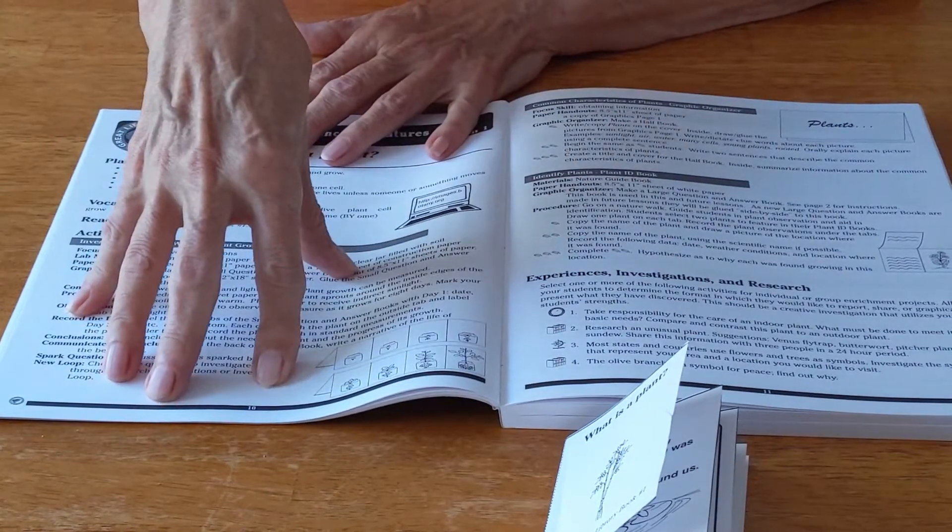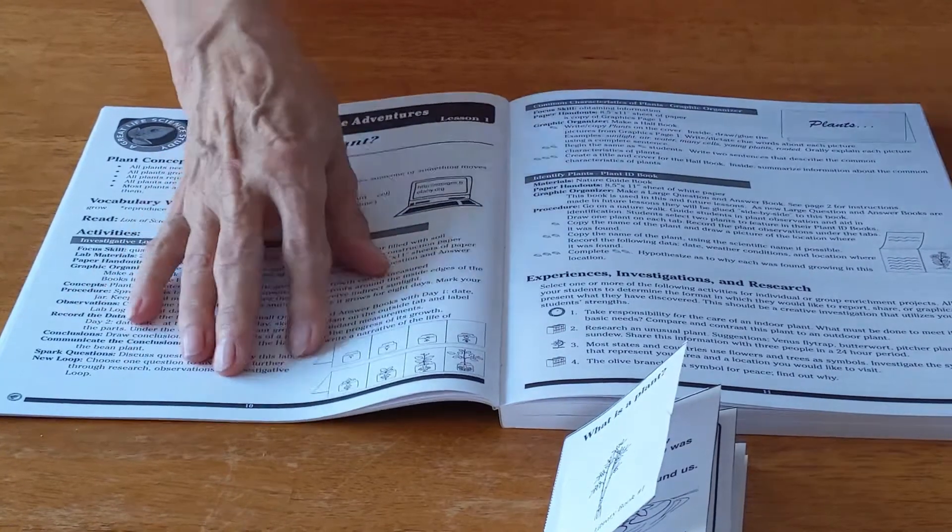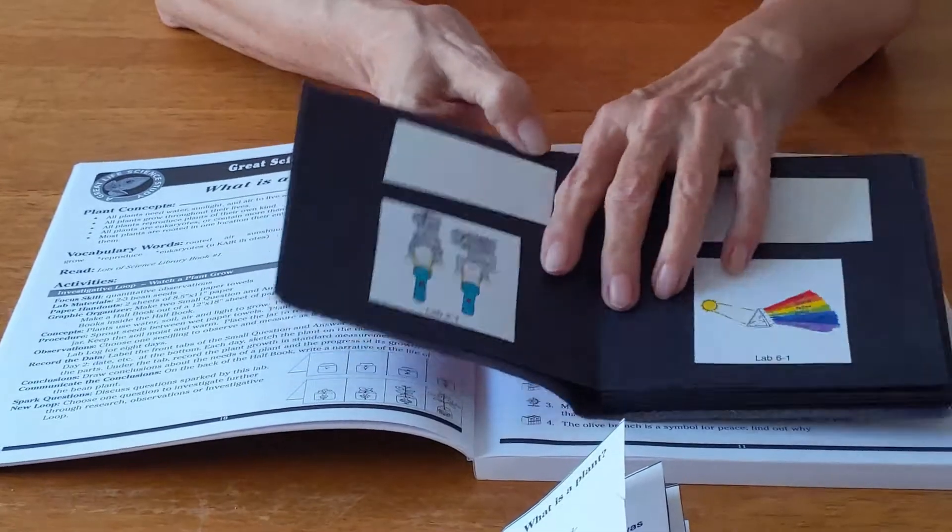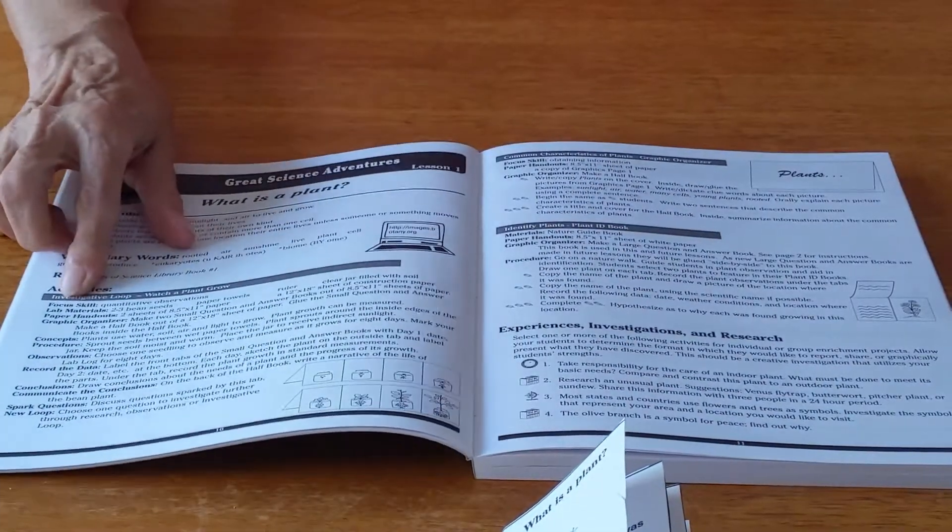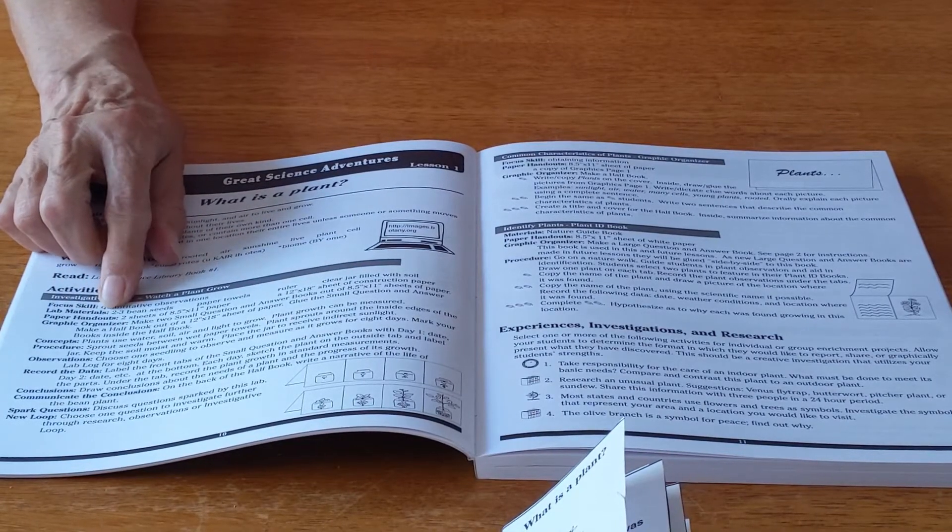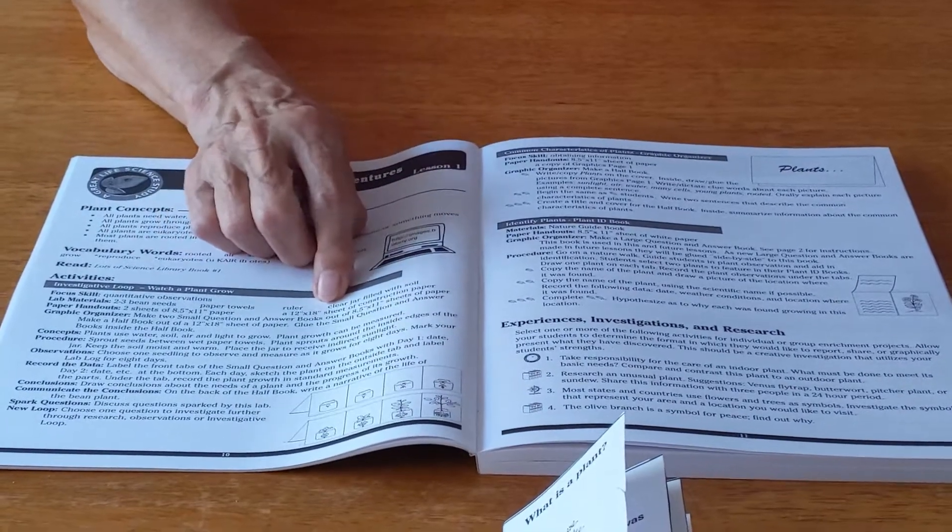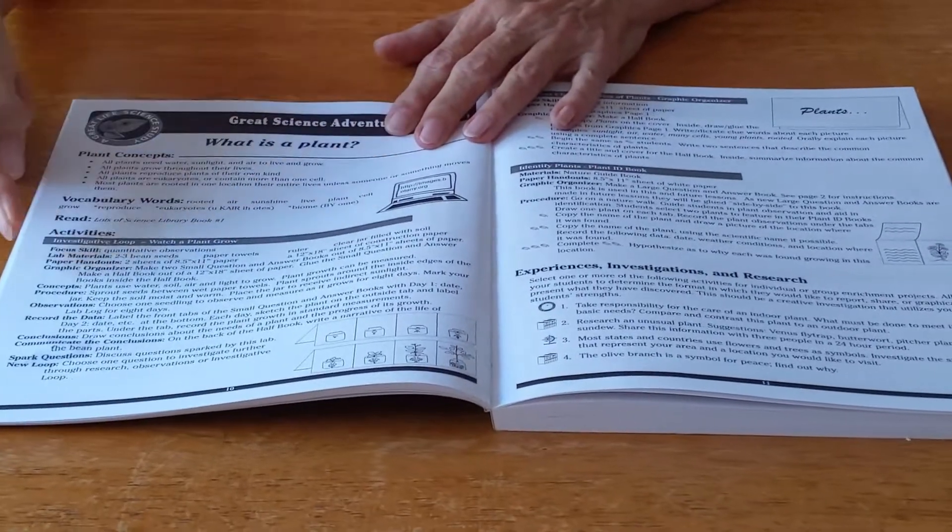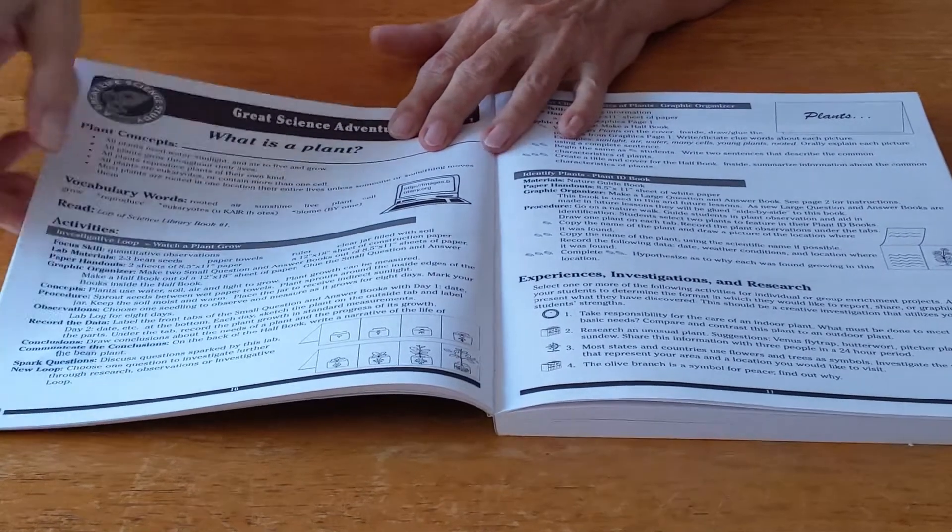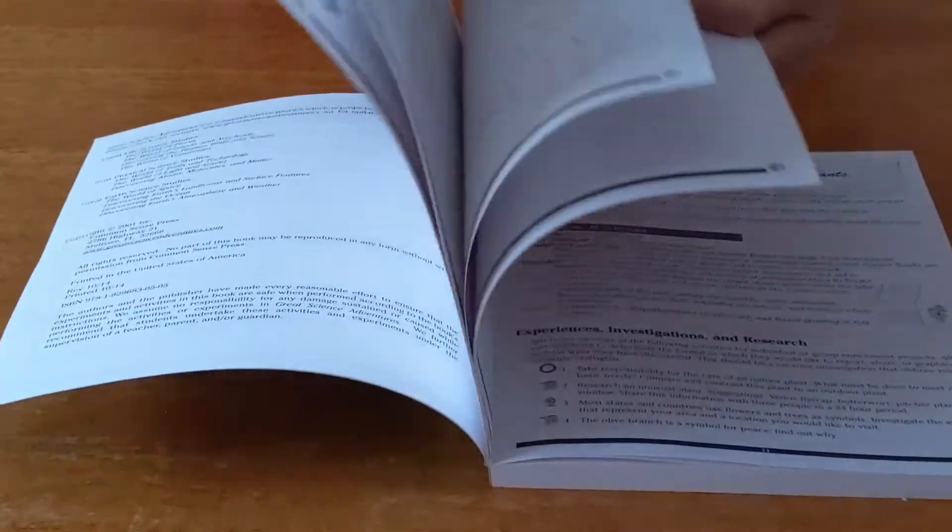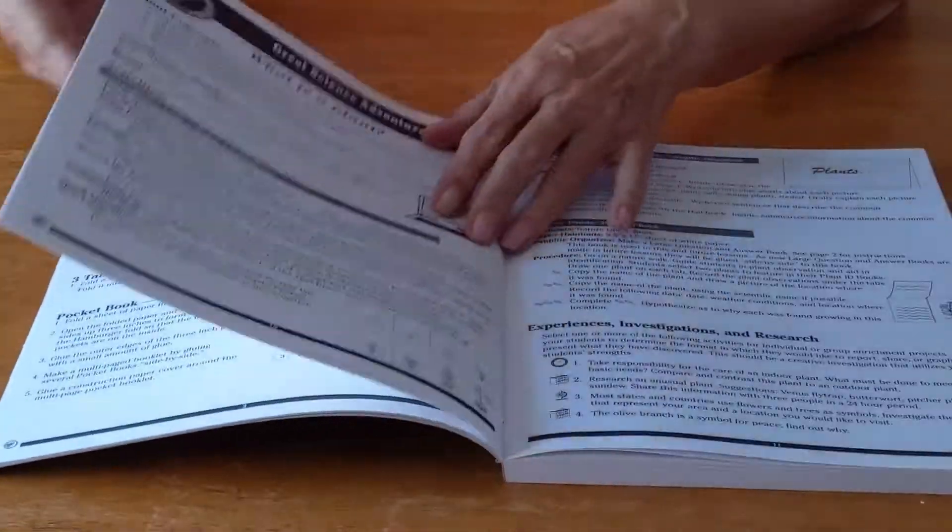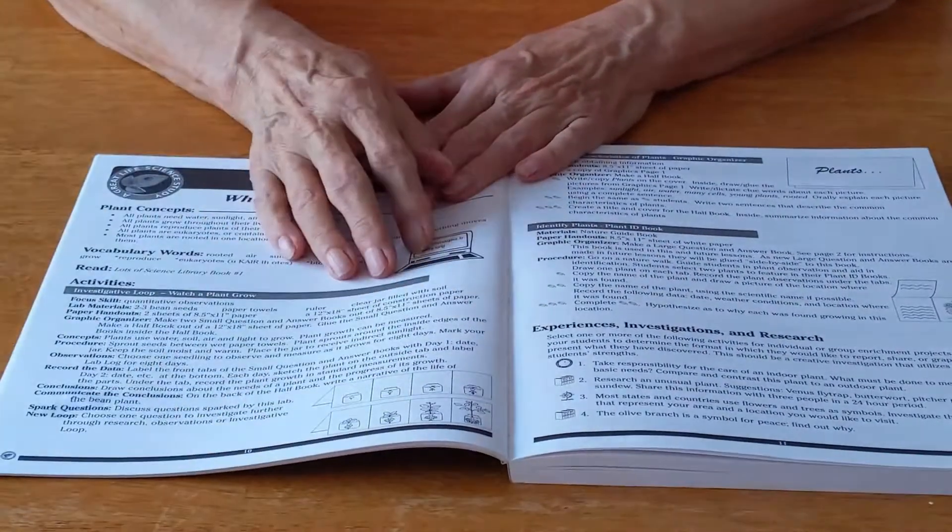In each one of our programs your students will make a lab book. We have a graphic for each lab. It will tell you right here lab materials you need are two or three bean seeds, a paper towel, ruler and chalk, and a clear glass filled with soil. Also here we have listed the paper handouts you need and the graphic organizer. It tells you the type of organizer you need to make and where to find it in this section.